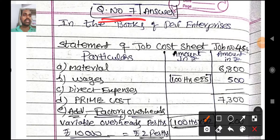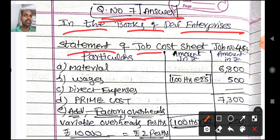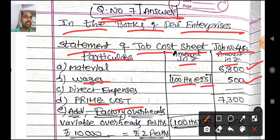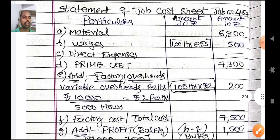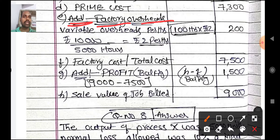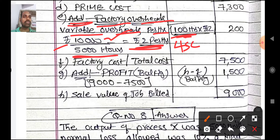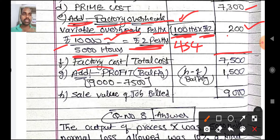Question number 7 answer — in the books of Devi Enterprises, statement showing job cost sheet for job number 454. Material cost: 6800 rupees. Wages: 100 hours into 5 rupees = 500 rupees. Prime cost: 7300 rupees (no direct expenses). Add factory overheads — variable overheads per hour: total for all jobs 10,000 divided by 5000 hours = 2 rupees per hour. For job 454, 100 hours into 2 rupees = 200 rupees. Adding to prime cost 7300, factory cost = 7500 rupees total cost.